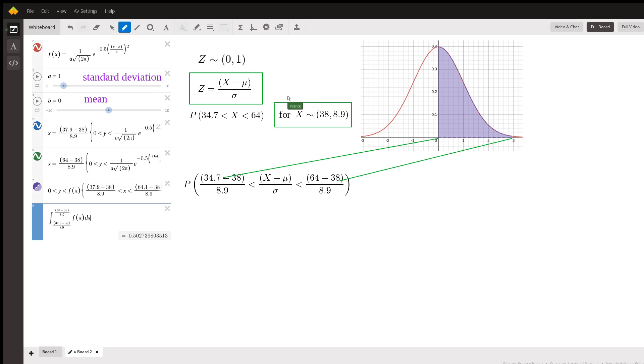And so there was one table for the standard normal, and if your distribution wasn't standard, then you would have to convert it. So all you do... So we're looking for—this is what we're looking for. Let's remember now what we're looking for.